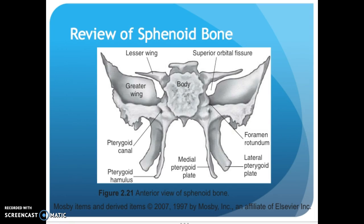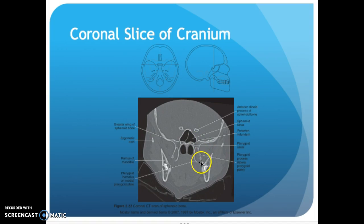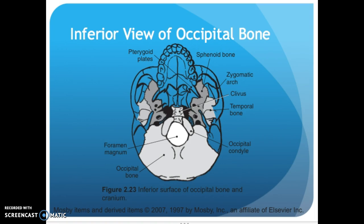To review the sphenoid bone up top, you have your superior orbital fissure. Your foramen rotundum is tucked up under, and coming down you have your lateral pterygoid, your medial pterygoid with the hamulus hanging off the bottom, and your pterygoid canal, greater wing, lesser wing, and the body. Looking here — anterior clinoid — you've got to look and see where we're slicing to know where you're at. You have your anterior clinoid process of your sphenoid bone, sphenoid sinus, your foramen rotundum. Coming around, you can see your medial and lateral pterygoid plates, ramus of your mandible, that's your zygomatic arch free-floating out there, and this is your greater wing. So that should sum up.